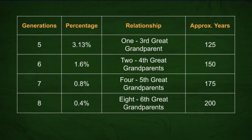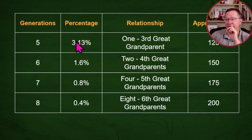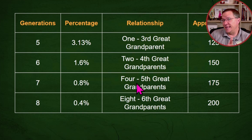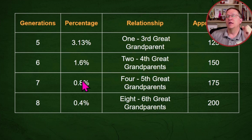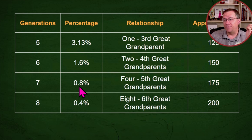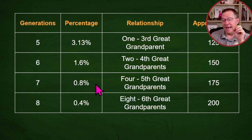Going back to our chart: with one third great grandparent, one fourth great grandparent, and one fifth great grandparent, it's just adding up the math. We start with three percent from the third great grandparent, add 1.6% for the fourth great grandparent — that's 4.7% — and then add another 0.8% for the fifth great grandparent. That gives us about 5.5% average from this combination of three ancestors.